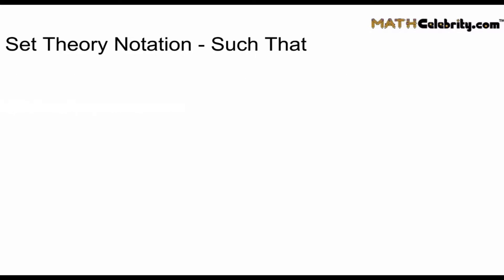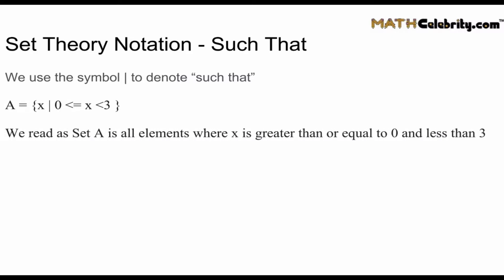Another piece of set notation is such that and here's how that works. We use the vertical symbol, it looks like a brace or almost an L, to denote the phrase such that. And so we have, let's do an example. Set A is all X such that X is greater than or equal to zero and less than three. So using the such that let's build that set notation. And we're going to read this as set A as all elements where X is greater than or equal to zero and less than three.